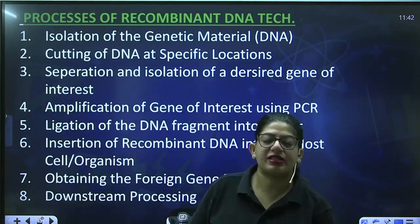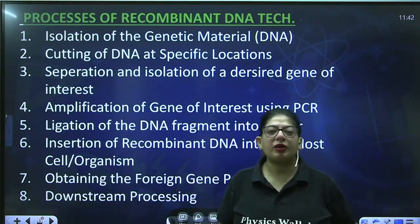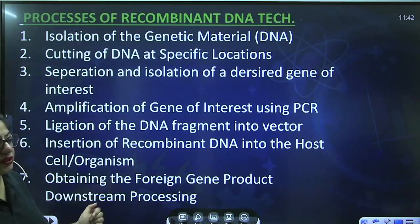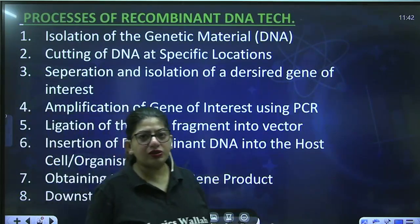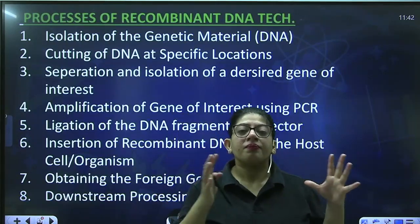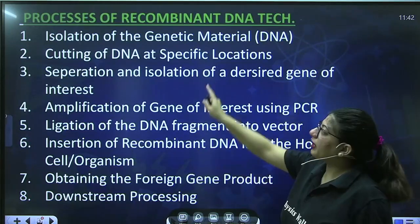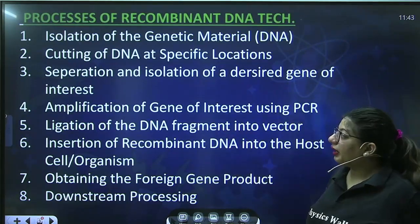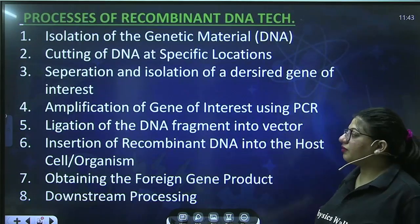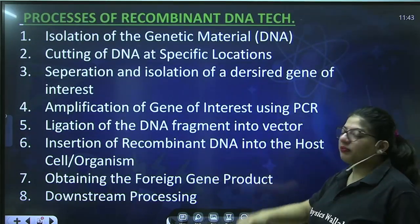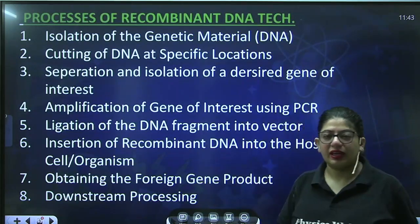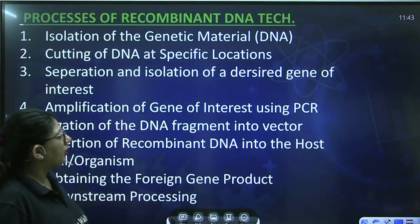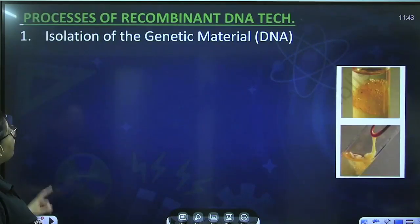These are all the steps of the various processes that take place whenever you are going to make a product using recombinant DNA technology. The first step is isolation of the genetic material — whether of a vector or your foreign DNA. Then you will cut it at a specific location, separate the desired gene, multiply it, join it with the vector, insert it into the host, multiply it, obtain your foreign product, and finally do downstream processing.